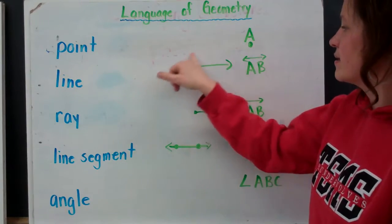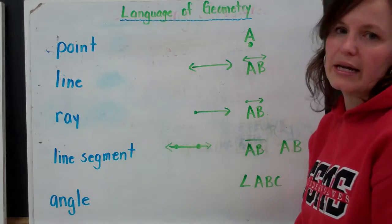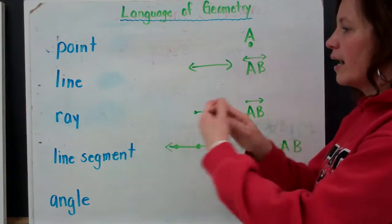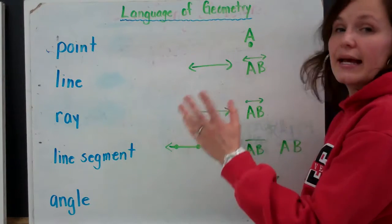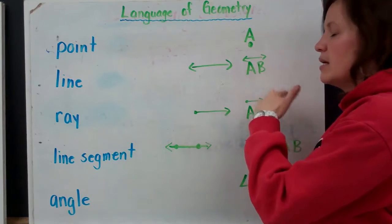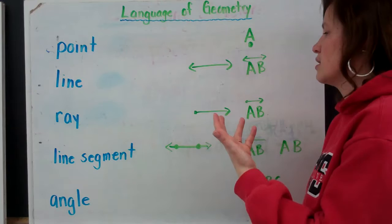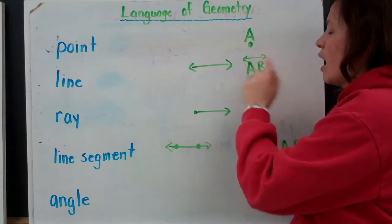A line. A line is identified as a line with an arrow on either side. This symbolizes that the line continues in those two directions forever. And we write that, again, capital letters, line A, B, or whatever line it's called, and with the line symbol over top.